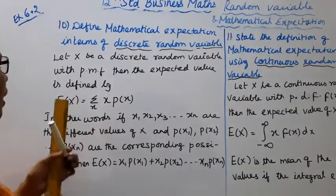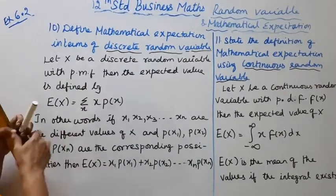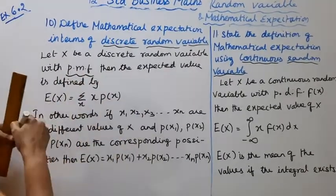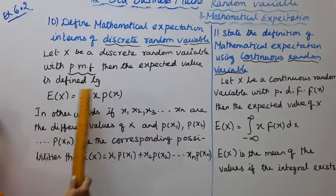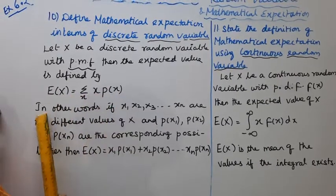Let x be a discrete random variable with probability mass function. Then the expected value is defined by E(x) = Σ x p(x). In other words,